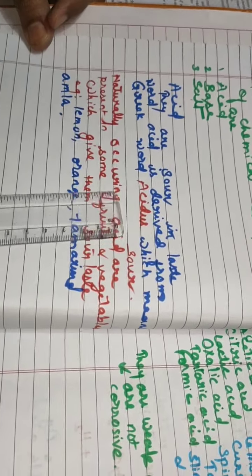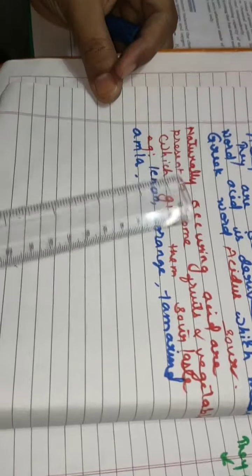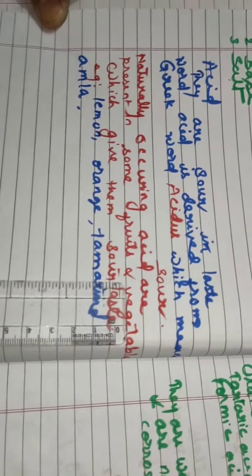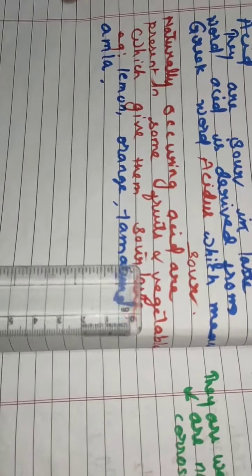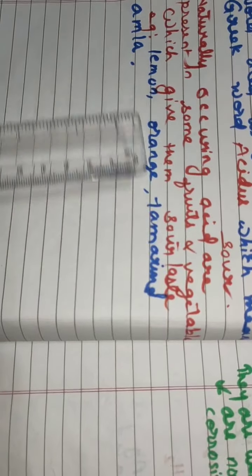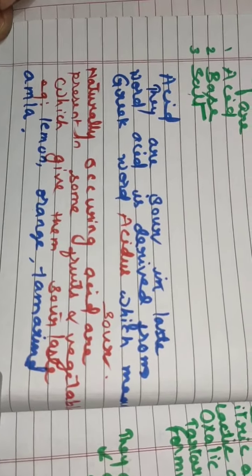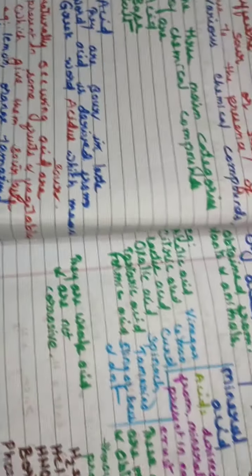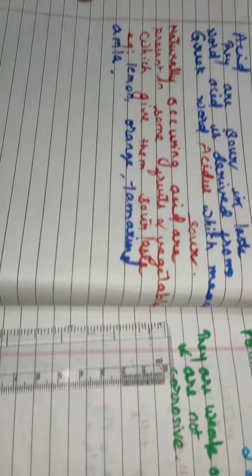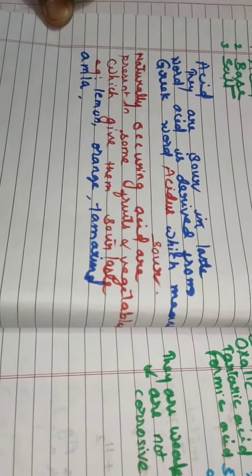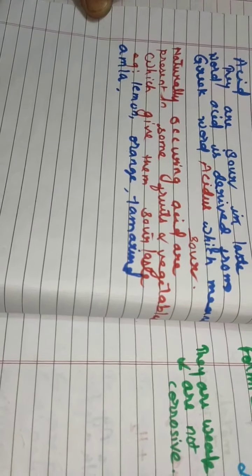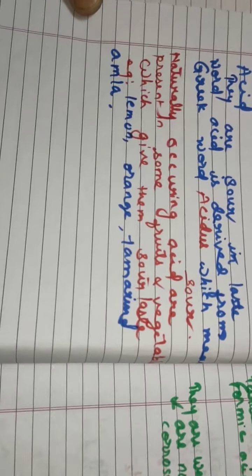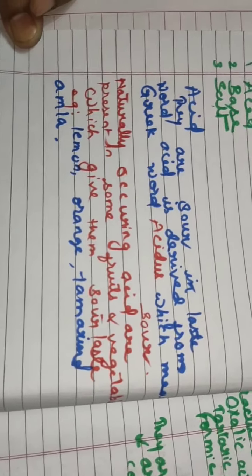Acid: they are sour in taste. Acid is derived from Greek word Acidus which means sour. Naturally occurring acids are present in some fruits and vegetables which give them sour taste. Examples: lemon, orange, tamarind, amla. So, whatever fruits or vegetables are sour, it is because of the chemical compound that is present in them, and that chemical compound is acid.